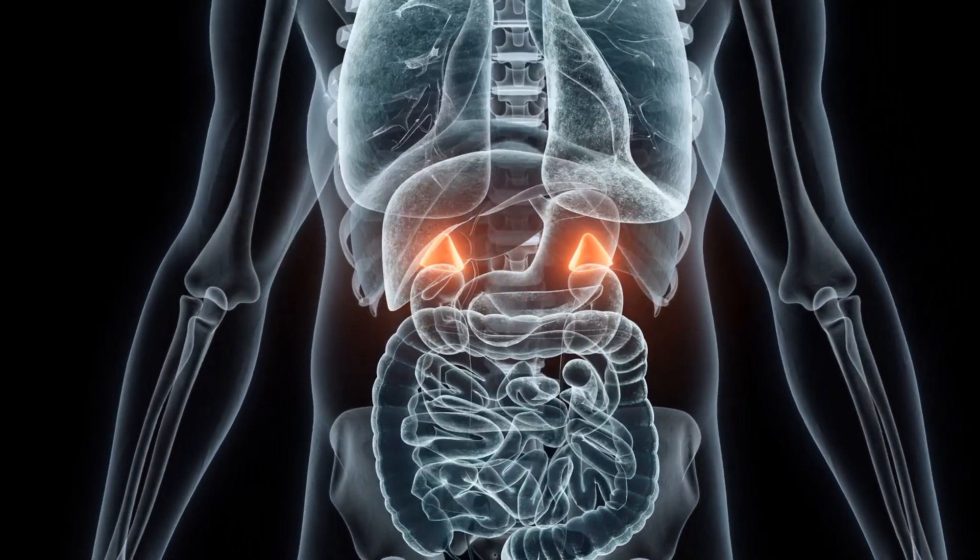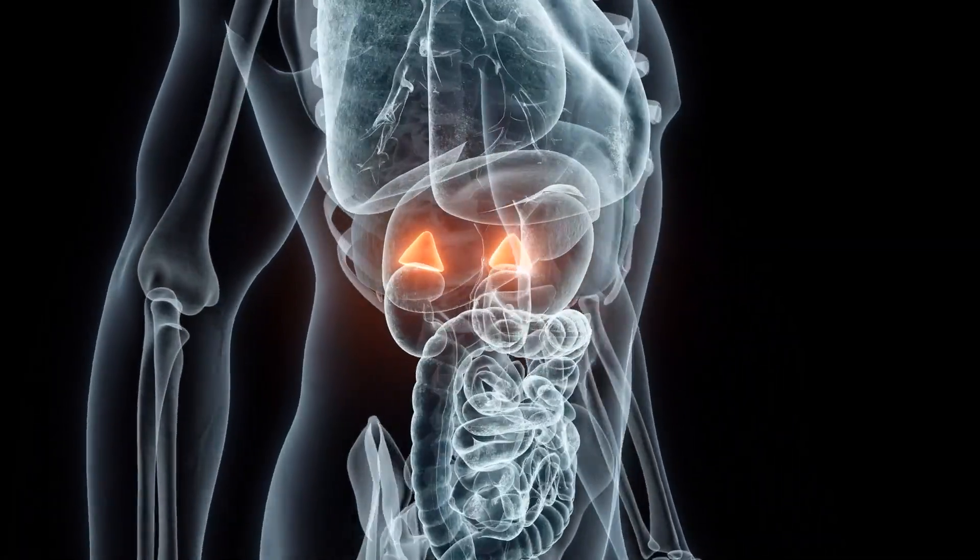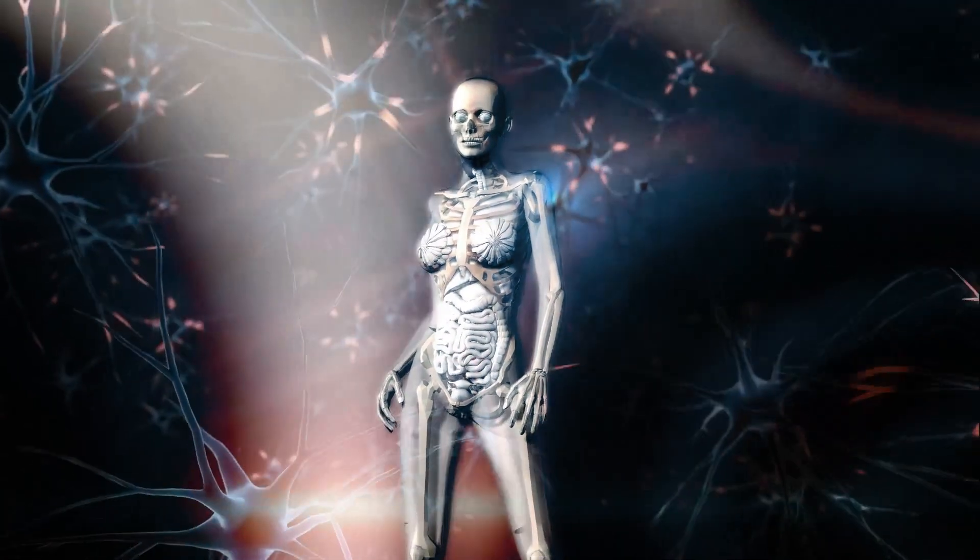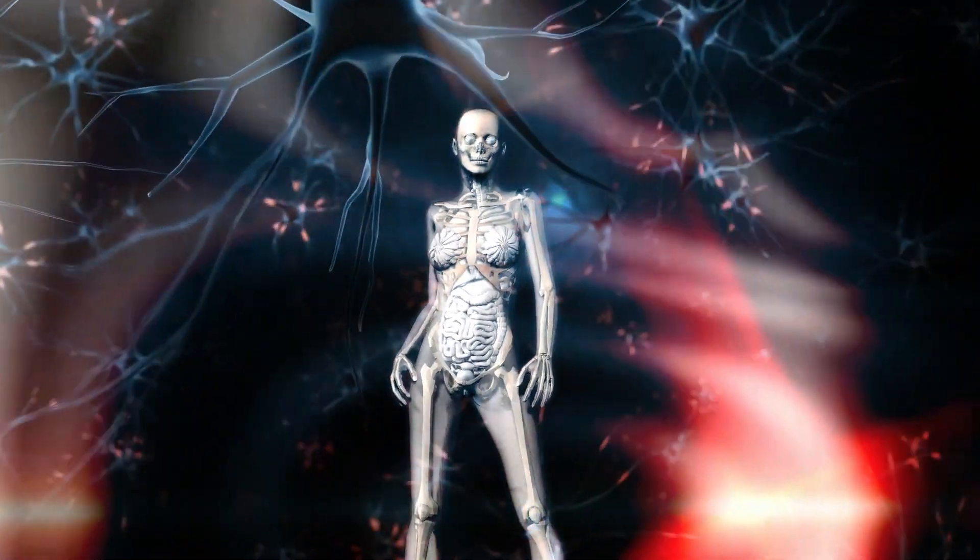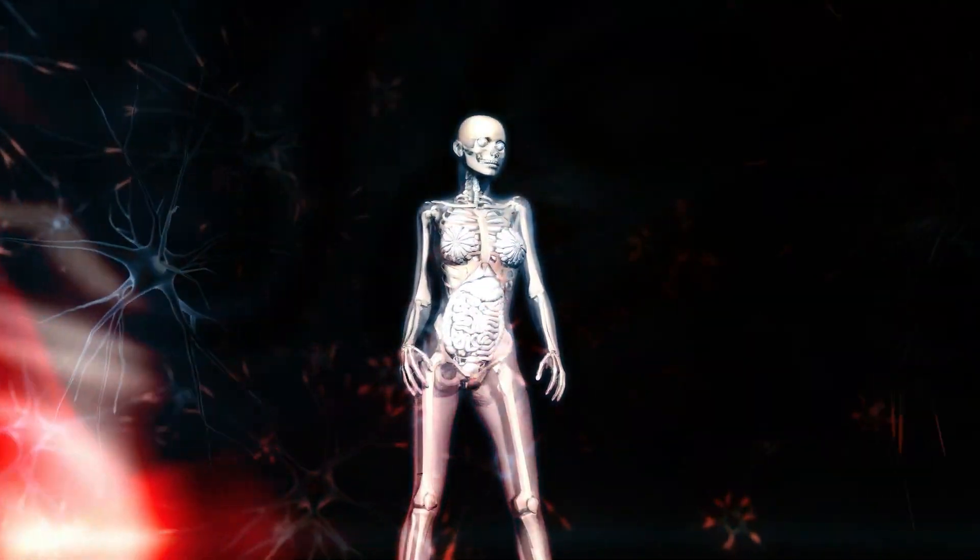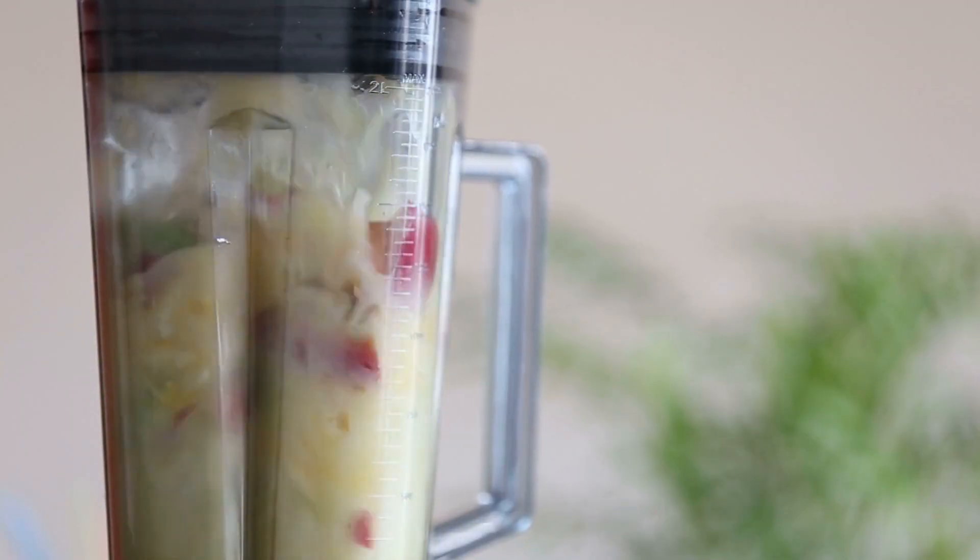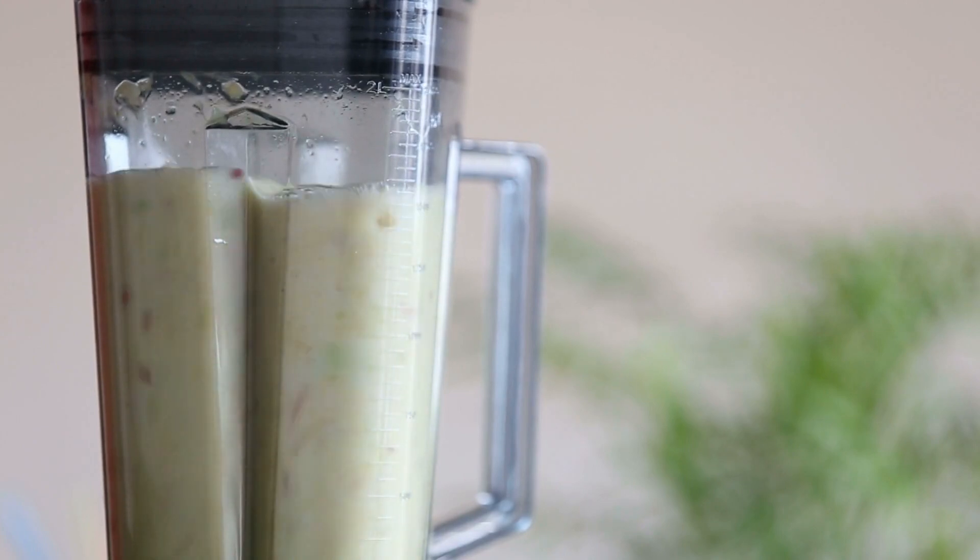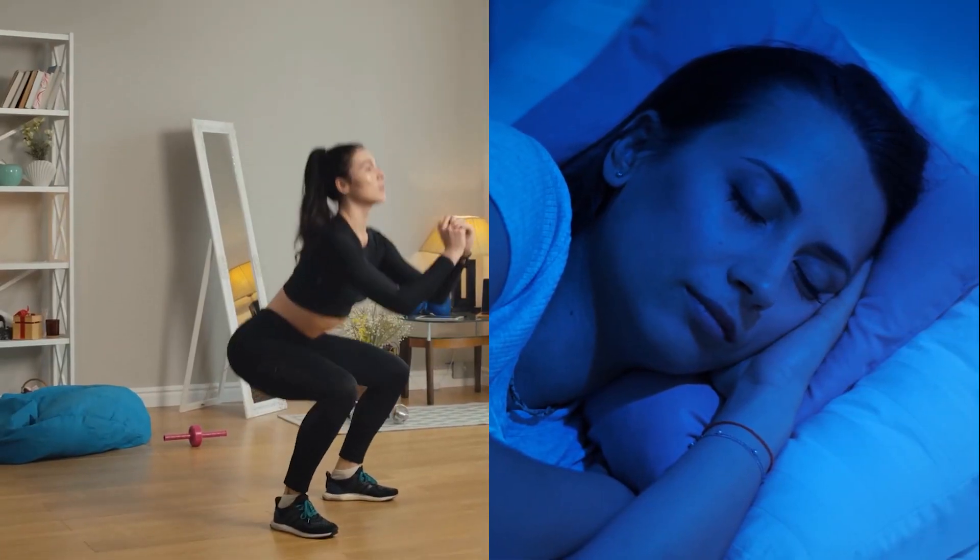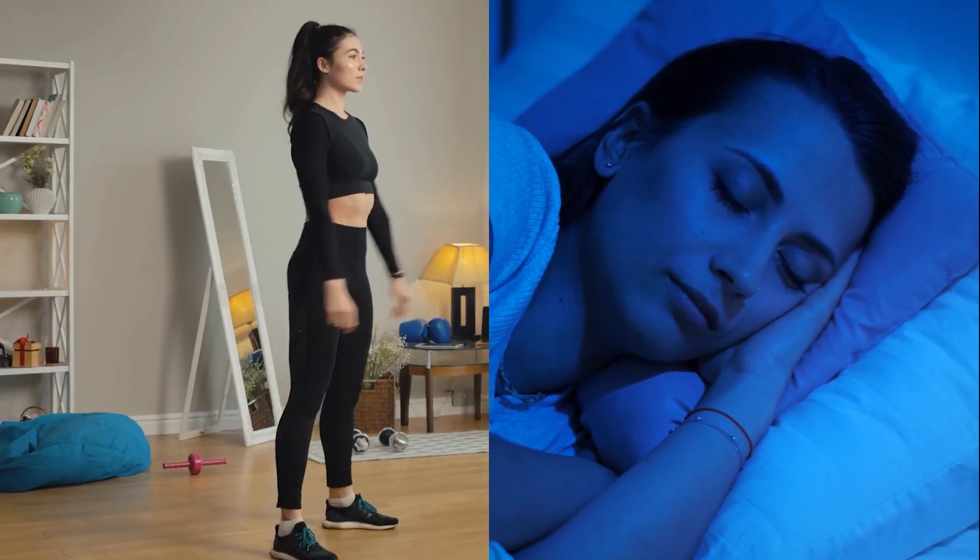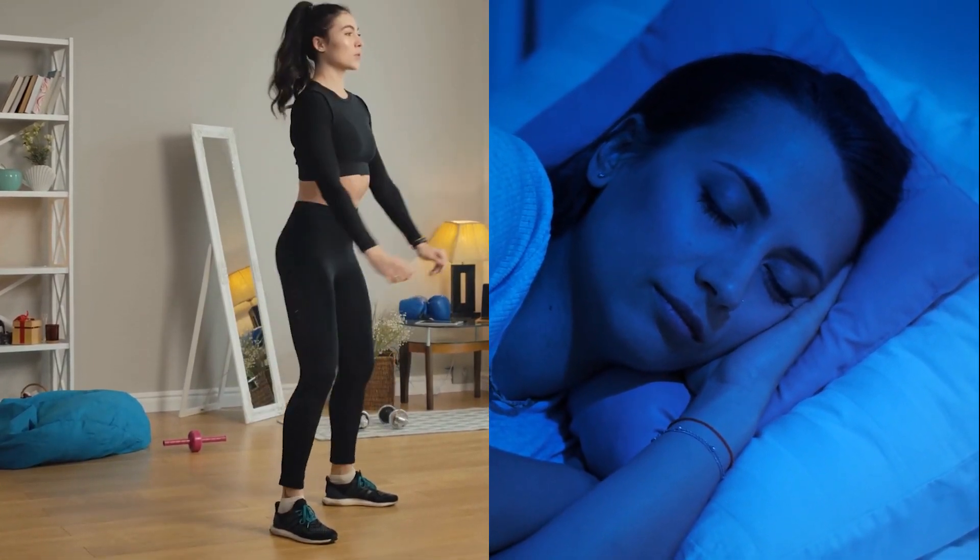Vitamin C also helps in reducing cortisol levels produced by the adrenal gland. Furthermore, vitamin C has antioxidant properties that reduce inflammation and oxidative stress on the body which can adversely affect hormone production. Incorporating vitamin C-rich foods into your diet alongside other healthy lifestyle choices such as regular exercise and adequate sleep can help increase your body's progesterone levels naturally.